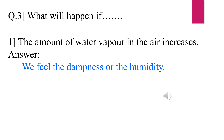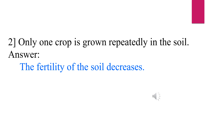Question 3: What will happen if — 1. The amount of water vapor in the air increases? Answer: We feel the dampness or the humidity. 2. Only one crop is grown repeatedly in the soil? Answer: The fertility of the soil decreases.